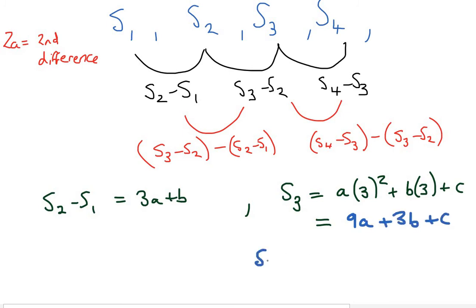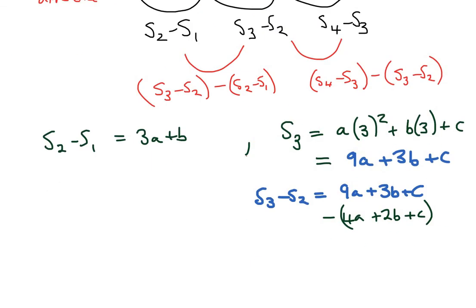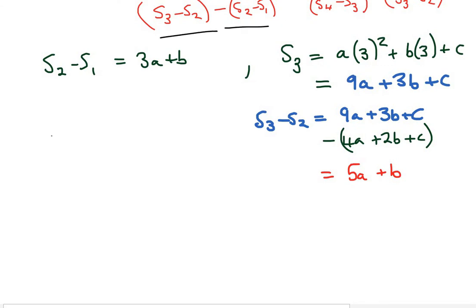So, what is the difference s3 minus s2? Well, it's 9a plus 3b plus c. And then, take away s2, which was our 4a plus 2b plus c. Right, good. And simplifying this, we get 5a. 3b minus 2b is b. And c minus c is 0. So, in total, then, this difference here, s3 take away s2 minus s2 take away s1 equals 5a plus b minus 3a plus b.